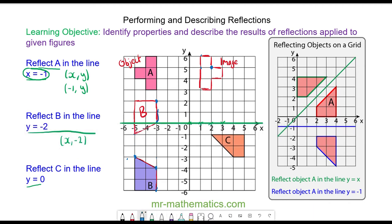I'm going to draw each vertex so it is one unit away from the mirror line on the other side. I will reflect this line here on the other side by drawing the two points together, and I'm going to recreate the object to an image keeping it congruent. I will check the image is correct: 1, 2, 3 and 1, 2, 3 on the other side. So here we have image C.